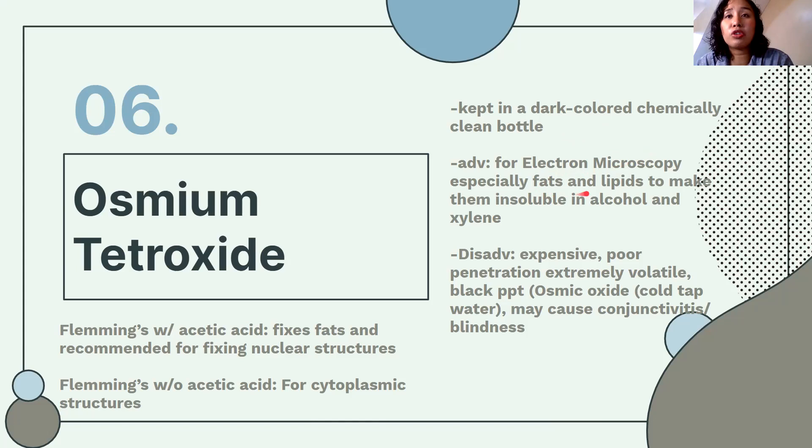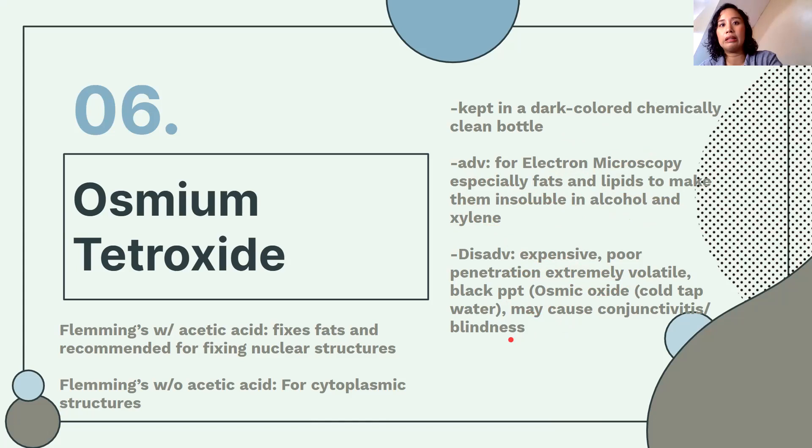Disadvantages of osmium tetroxide: it is expensive, has poor penetration, is extremely volatile, produces fumes, forms a black precipitate, and can cause conjunctivitis and blindness. The black precipitate can be removed by running tissue in cold dark water.